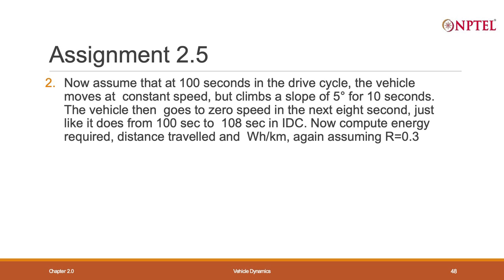Now I am going to change the drive cycle. I assume the first 100 seconds is exactly what I defined for IDC. But after that, the vehicle climbs a slope at 5 degrees for 10 seconds at a constant speed. Then the vehicle is taken to zero speed, just like in IDC. So I have changed the drive cycle.